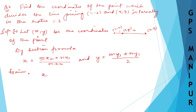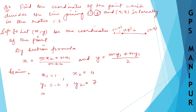Given values: x1 is the first coordinate of the first point, which is 1. x2 is the first coordinate of the second point, which is 4. y1 is the second coordinate of the first point, which is -2. y2 is the second coordinate of the second point, which is 7. m is 1 and n is 2, from the ratio 1:2.